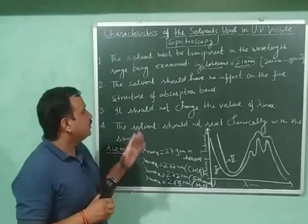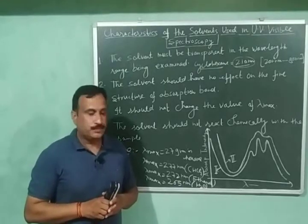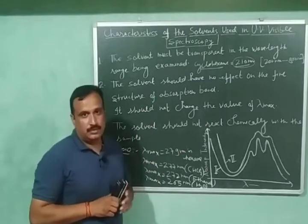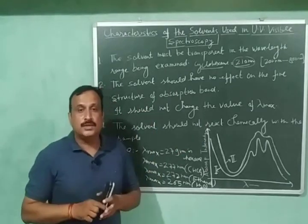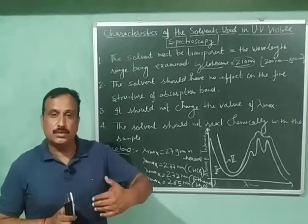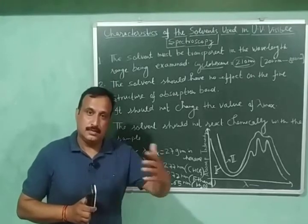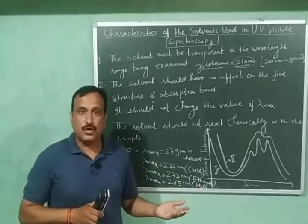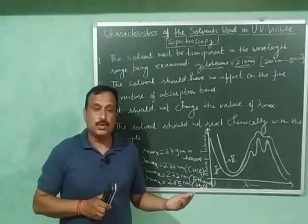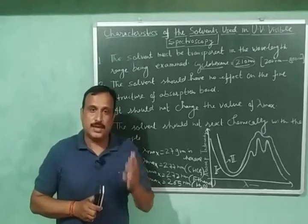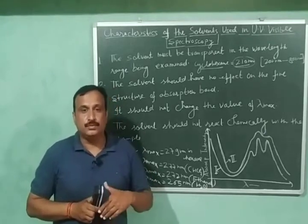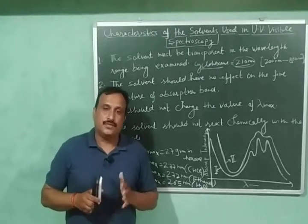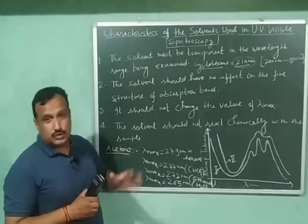And the fourth one is the solvent should not react chemically with the sample. That is there must not be a chemical reaction between the sample and the solvent. And if there is a chemical reaction, some new compounds will be formed and then we will not be able to record the spectrum of our sample because sample will be no more in the solution. So these are the very important and interesting characteristics of a good solvent.